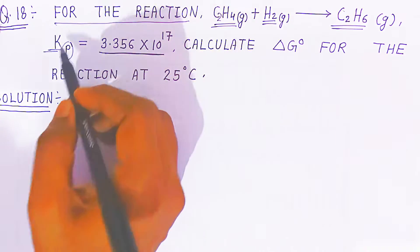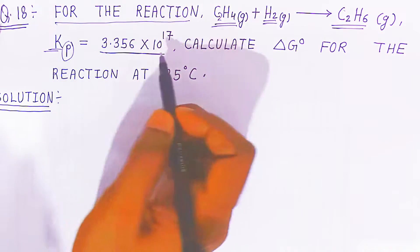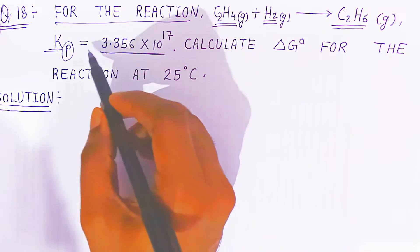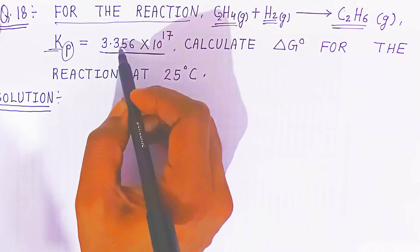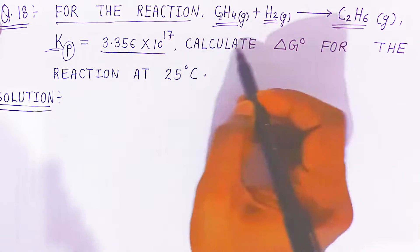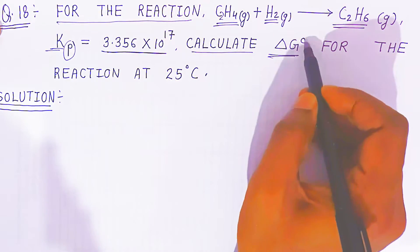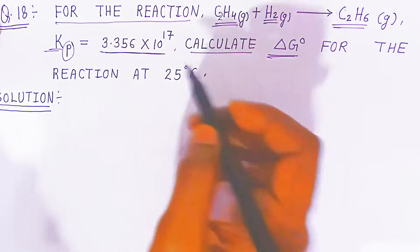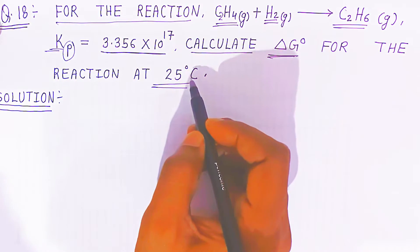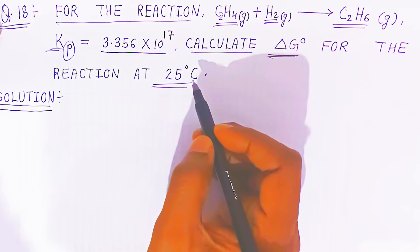So this is the equilibrium constant. You have to calculate standard Gibbs energy for the reaction when the temperature is 25 degrees Celsius.